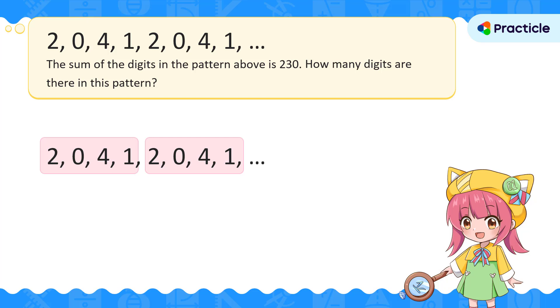We're given that the sum of the digits in this pattern is 230. Let's find the sum of the digits in one group. 2 plus 0 plus 4 plus 1 is 7. Can you guess what we're going to do next?